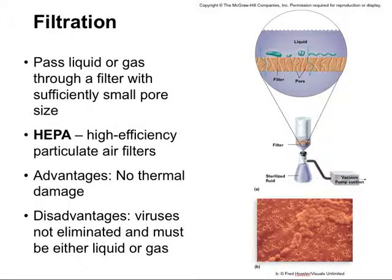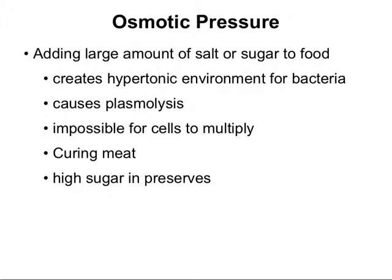The final means of microbial control that we'll consider is osmotic pressure. This is where we add a large enough amount of salt or sugar to food such that it creates a hypertonic environment for the bacteria. This hypertonic environment causes all the fluids to move out of the bacterial cells and causes plasmolysis — that is, the cell membrane is pulling away from the cell wall. This makes it impossible for cells to multiply. It's used for curing meat and in high-sugar preserves like jellies and jams.